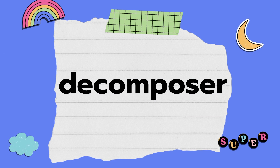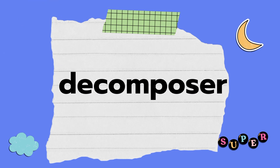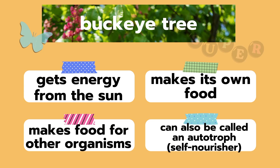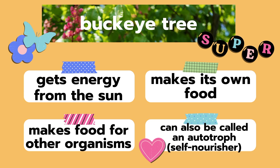I'm going to try that again. Clear your mind. Get ready to think about this one. A buckeye tree. A buckeye tree gets energy from the sun. It makes its own food. It makes food for other organisms. And it can also be called an autotroph, which means self-nourisher. What is it? Think about it — is it a producer, a consumer, or a decomposer?